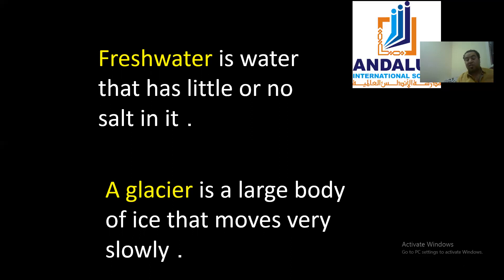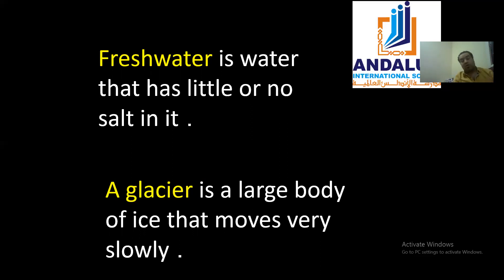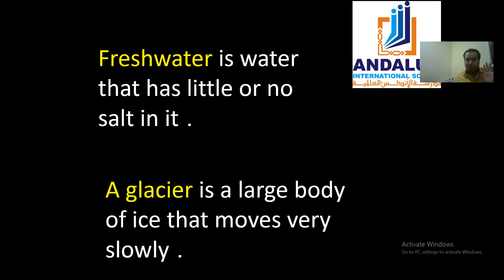Today we have a new term: a glacier. What's a glacier? It's a large body of ice that is moving. Sometimes it's called the river of ice, because when we have a large amount of ice moving it can be very dangerous. You might have seen this in movies about Mount Everest or similar mountains — the ice moves in streams.